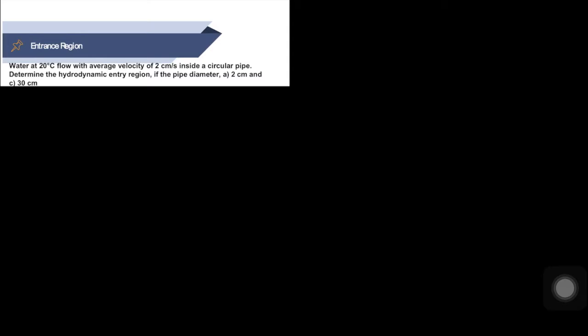Students, we are going to take a look at one example similar to the previous one, but we need to calculate the hydrodynamic entry length. What is given: water is at 20 degrees centigrade. At 20 degrees centigrade using a table, the density comes up to be 998 kg/m³ and the dynamic viscosity comes out to be 0.001002 kg/m·s.